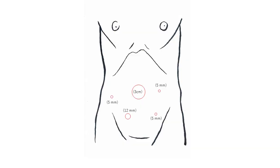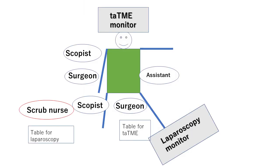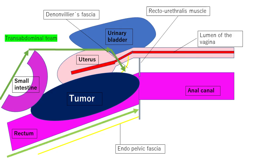A 3-centimeter incision was made at the umbilicus and an EZ axis was placed. An additional 12-millimeter trocar was inserted into the left quadrant, and three 5-millimeter trocars were also inserted. The transanal approach was simultaneously started by the transabdominal team. We planned to perform a rendezvous procedure on the Denonvilliers fascia.